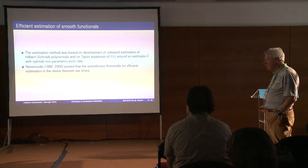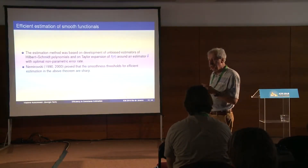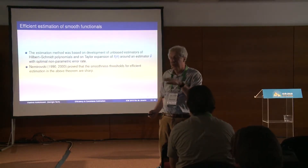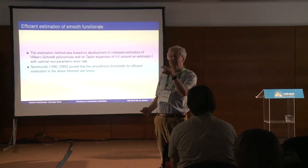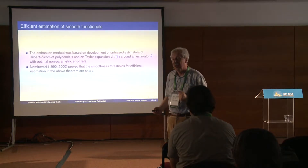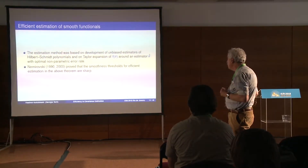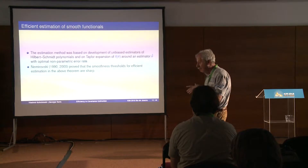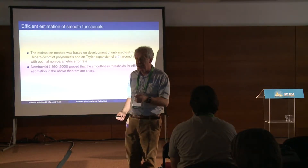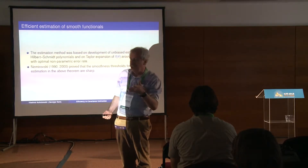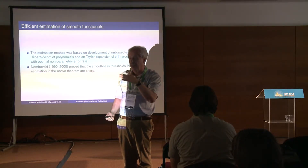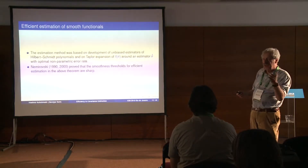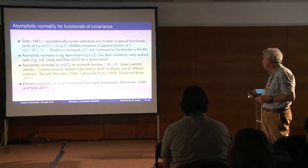In a later work, Nemirovskii, with considerable effort using rather subtle information-theoretic arguments, proved that these thresholds are sharp — you can always find a functional of lower smoothness that cannot be estimated with square root of n rate. The construction of the efficient estimator is very nice: they reduce the problem to unbiased estimation of Hilbert-Schmidt polynomials, then use complexification of the space and properties of harmonic functions to construct an unbiased estimator, which happens to be efficient for polynomials, and then use this technique to construct efficient estimators for smooth functions.